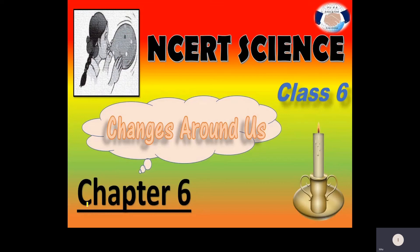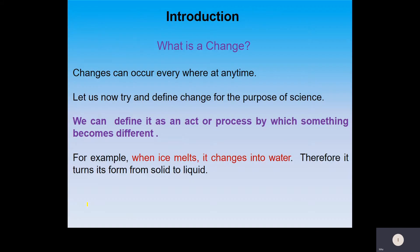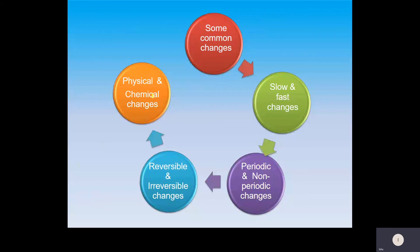Good morning students. Last time we had started with chapter number six, that is 'Changes Around Us.' We had discussed about two types of changes: fast and slow changes, as well as periodic and non-periodic changes. Today we will discuss the remaining two kinds of changes, that is physical and chemical changes, as well as irreversible and reversible changes.